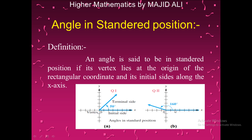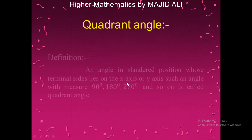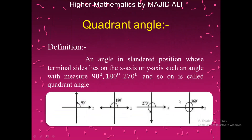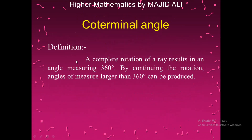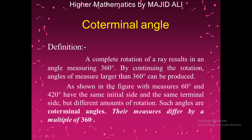In standard position, the initial side is along the x-axis and the vertex is at the origin. Quadrantal angles are angles with fixed values such as 90 degrees, 180 degrees, 270 degrees, and 360 degrees. A coterminal angle is produced by a complete rotation of 360 degrees; continuing the rotation produces angles larger than 360 degrees.